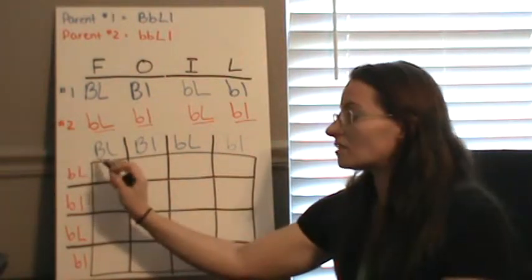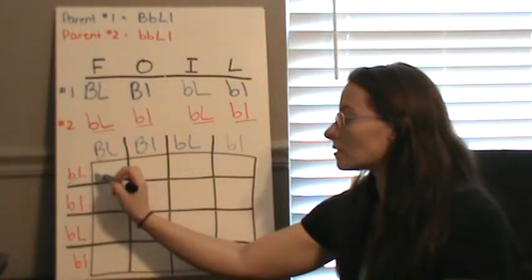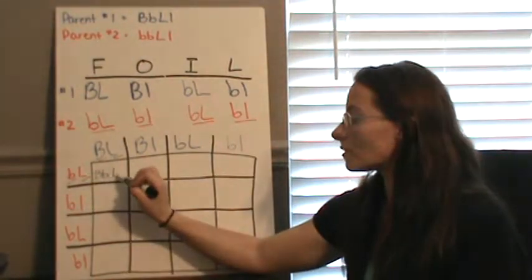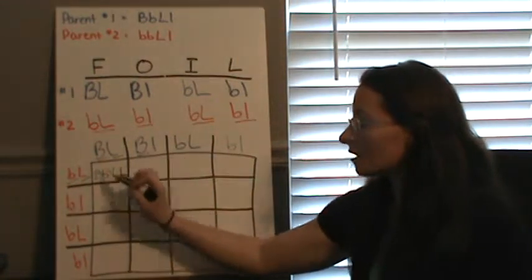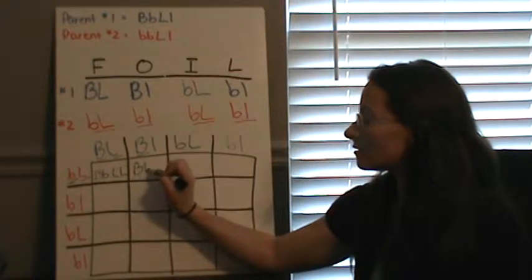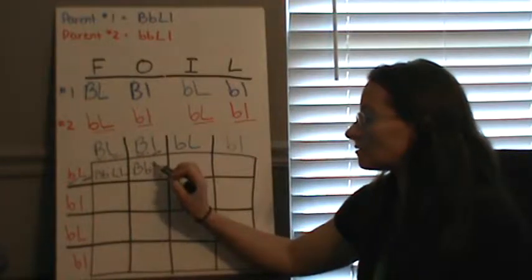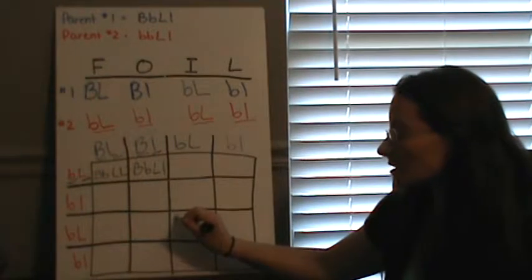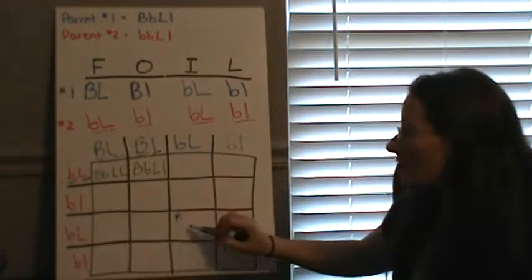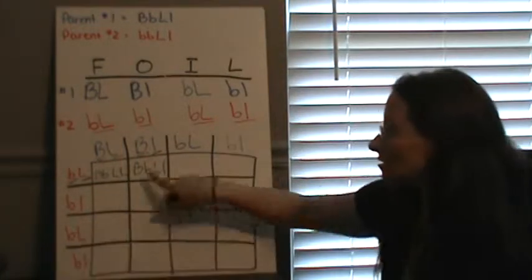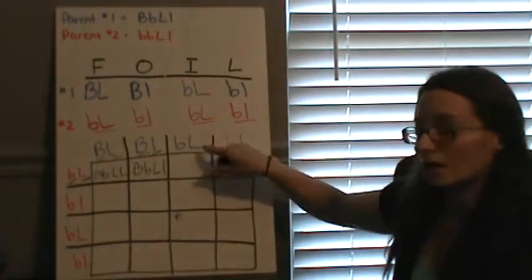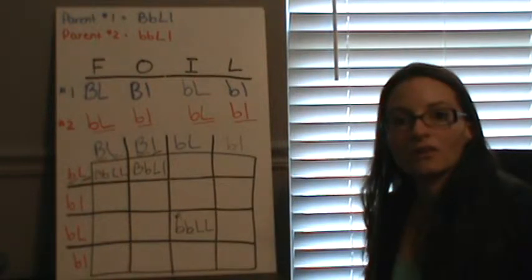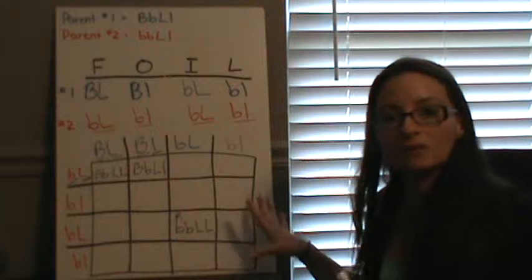So for the first box, we fill in B's first: big B, little b. Then our L's: big L, big L — giving us BbLL. For the next box: big B, little b, big L, little l — BbLl. We fill in the entire Punnett square this way. Each box is determined by what's to the left and what's above it. For example, one box would be little b, little b, big L, big L — bbLL. If you want to pause and fill in your Punnett square to practice, go ahead, and then in just a minute the next page will already have it completed.